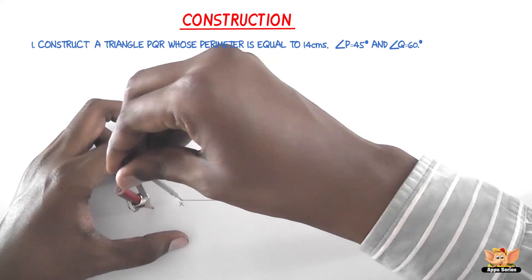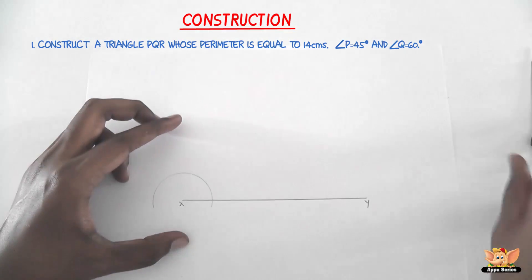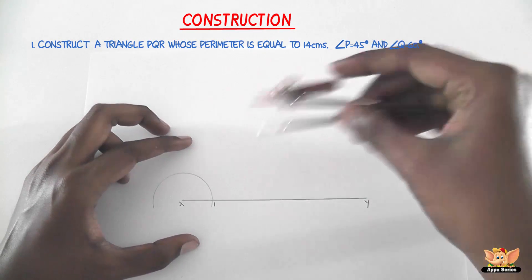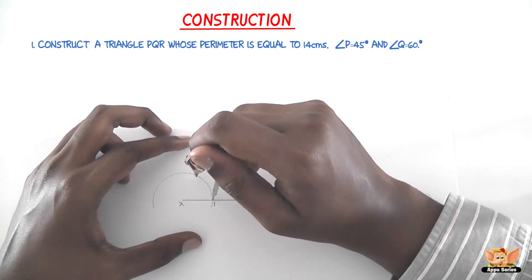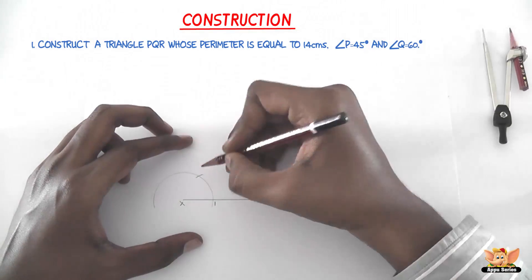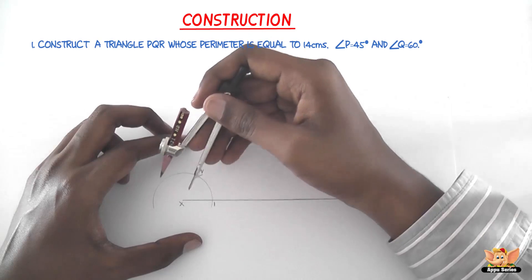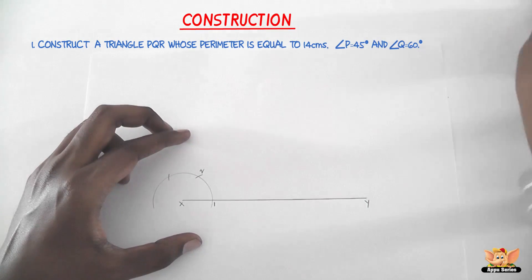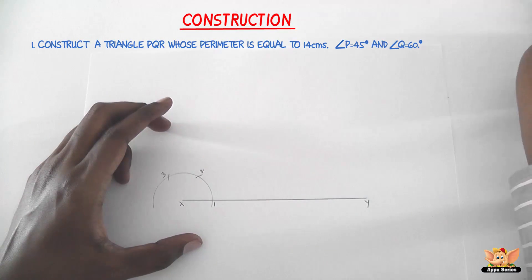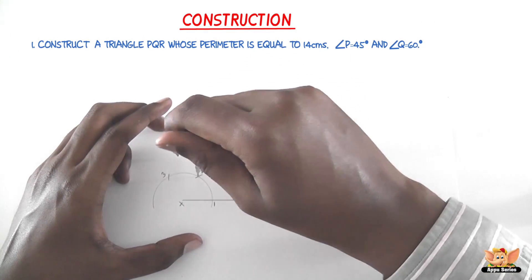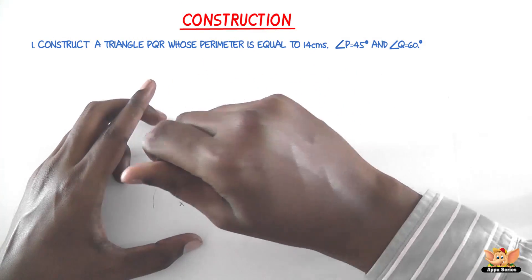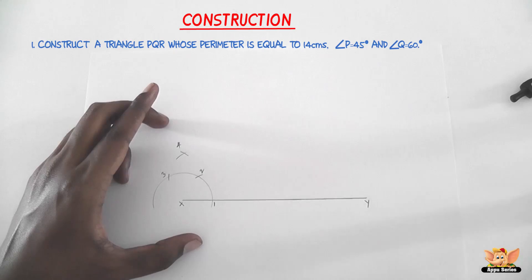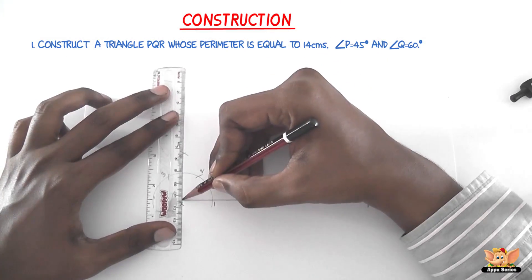With X as center and a convenient radius, draw an arc that cuts line XY at point 1. With 1 as center and the same radius, cut an arc on the arc just drawn and name it 2. Then with 2 as center draw another arc, and with 3 as center draw an arc that cuts the previous arc — name that point 4. Join X4 to get 90 degrees.